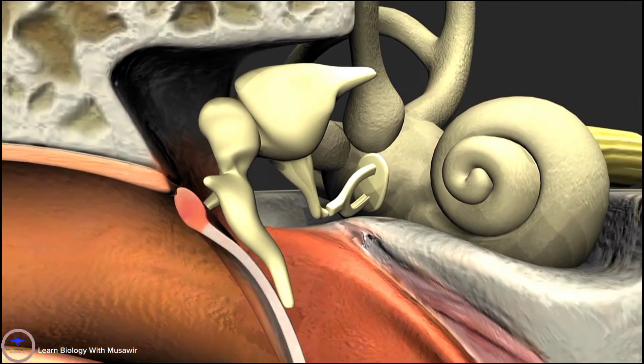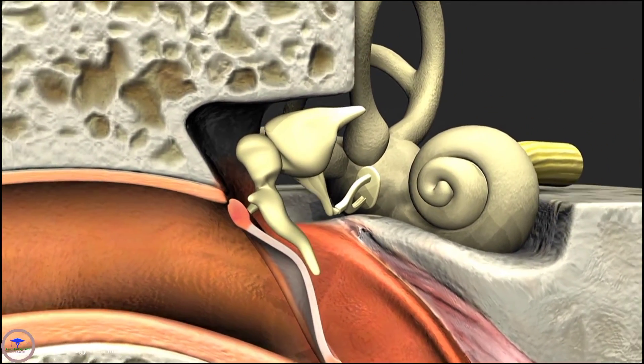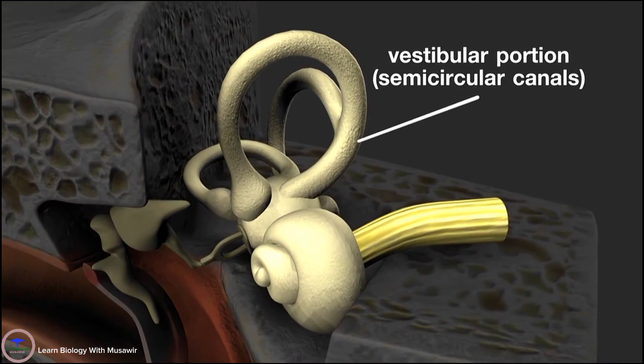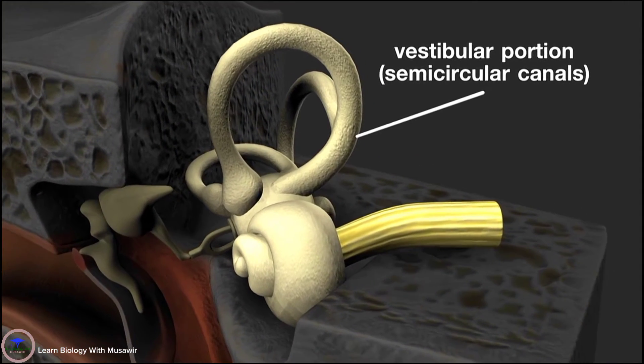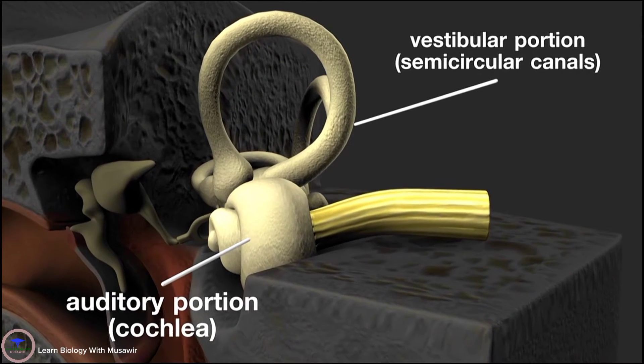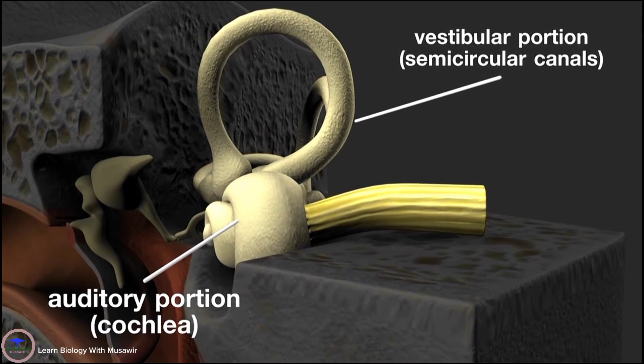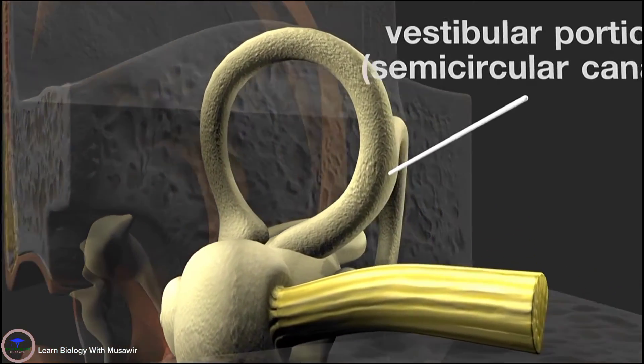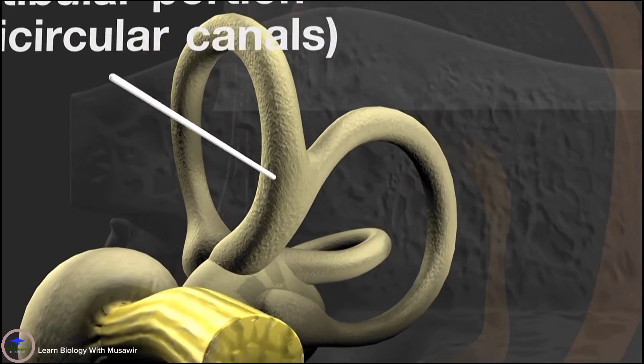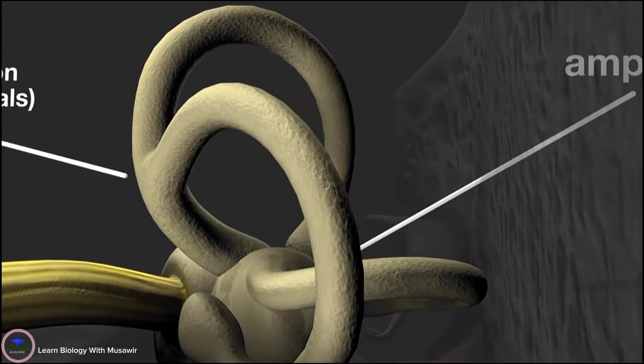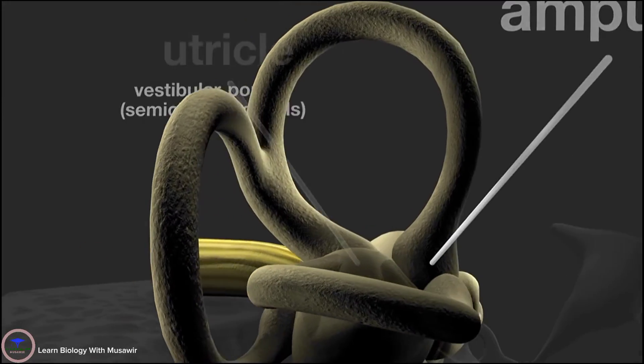The inner ear has two distinct portions: the vestibular portion concerned with balance and the auditory portion, the cochlea, which is concerned with hearing. The vestibular portion is made up of three semicircular canals, each canal has a swelling at one end, the ampulla, and two membranous sacs, the utricle and the saccule.